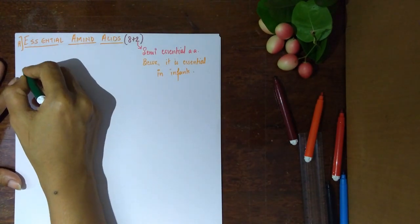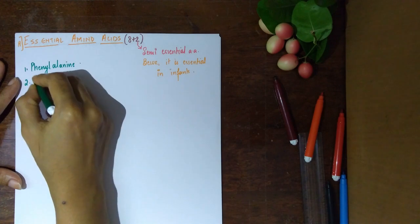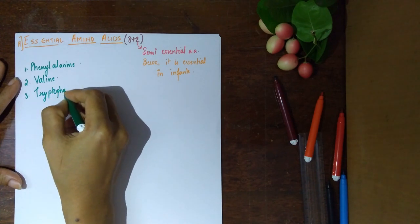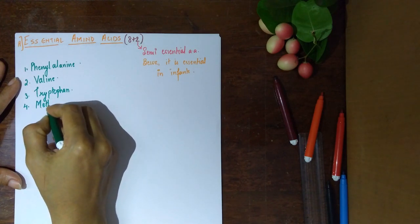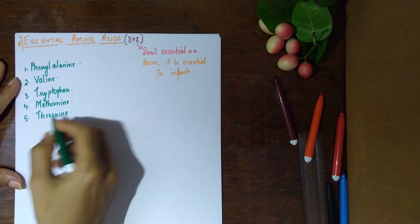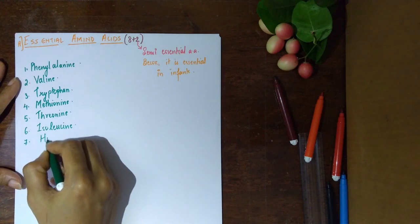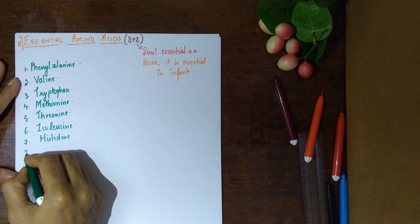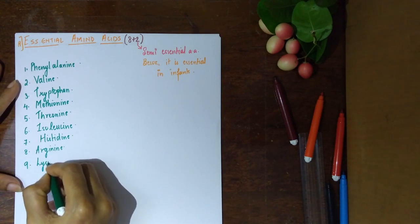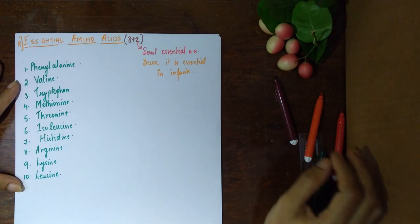The list of essential amino acids: first, phenylalanine; second, valine; third, tryptophan; fourth, methionine; fifth, threonine; sixth, isoleucine; eighth, arginine; ninth, lysine; and tenth, leucine. These are your 10 essential amino acids. Out of these, numbers 7 and 8 — histidine and arginine — are semi-essential.